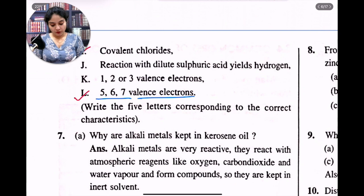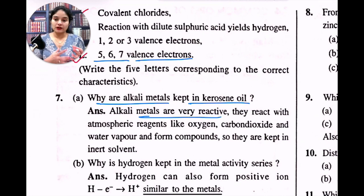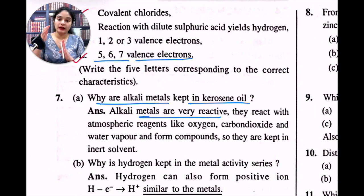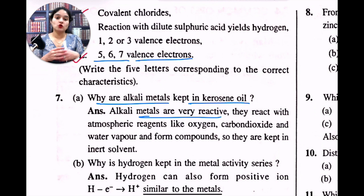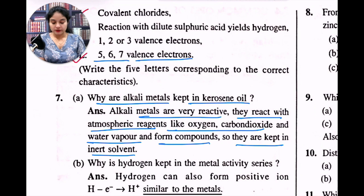Why are alkali metals kept in kerosene oil? Alkali metals are very reactive and very unstable. In the atmosphere, they react with oxygen and oxidize, and this reaction is so exothermic that there is actually fire. To avoid that, we try to stop their direct contact with the atmosphere. Alkali metals react with atmospheric reagents like oxygen, carbon dioxide, and water vapour and form compounds. So they are kept in an inert solvent — and that inert solvent is kerosene oil.